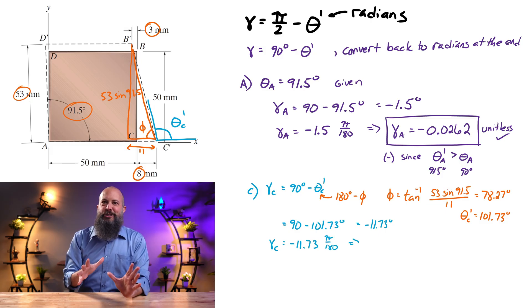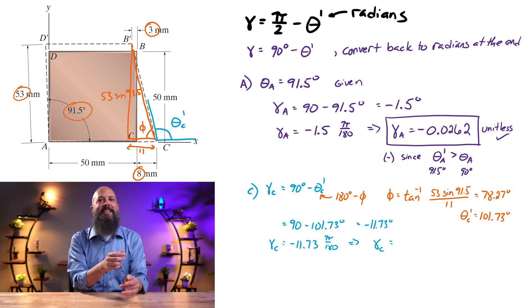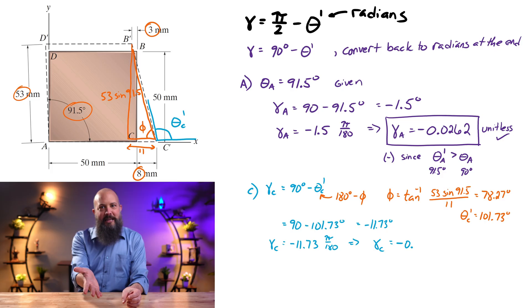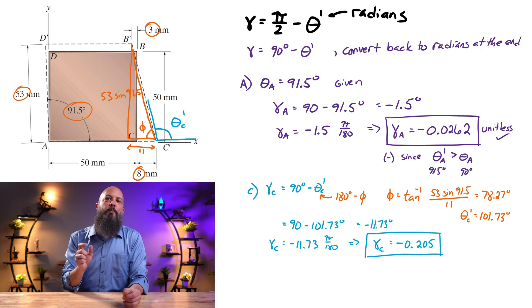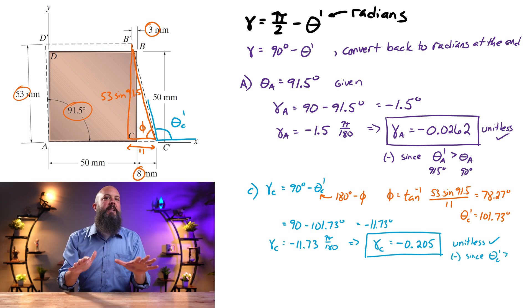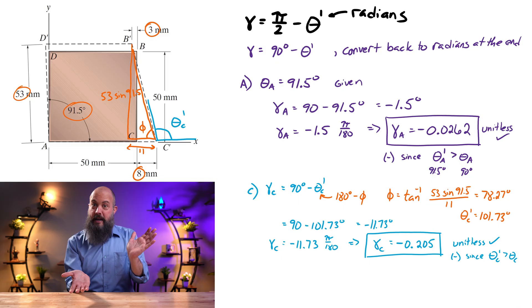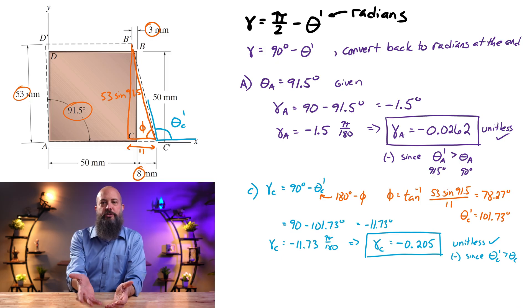So I'll do my shear strain, 90 minus 101.7, get negative 11.7 degrees, but I have to convert that to radians times pi divided by 180, negative 0.2. Would you call this radians or just box it unitless? So it's still negative, which is good, because theta C is bigger than 90 degrees, so I should get a negative answer for shear strain.